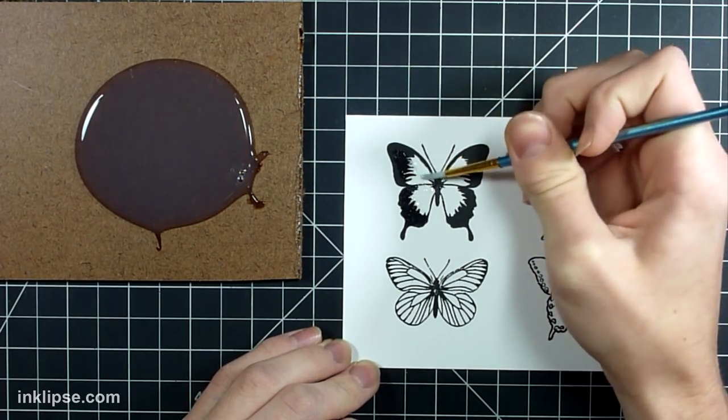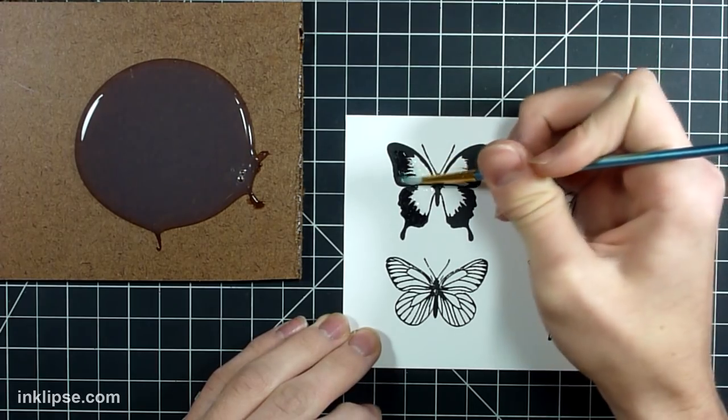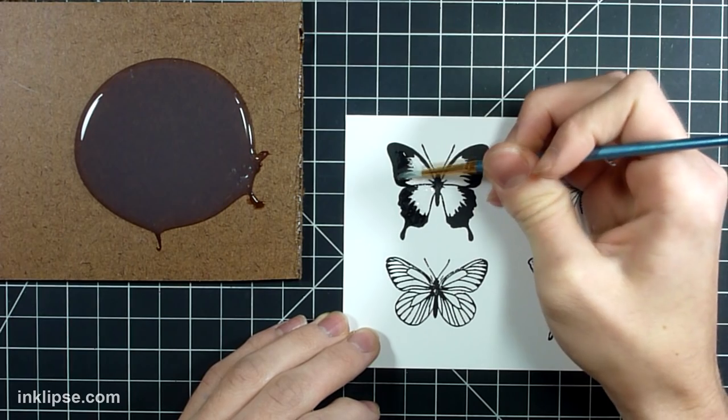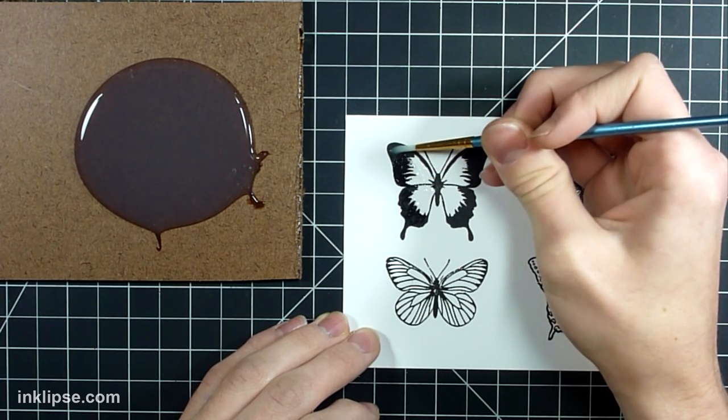Go all the way up to the lines, creating kind of a medium layer. You don't want it too thick because then it won't dry and you don't want it too thin because then the ink will seep through. You want it just a medium coat, just enough.